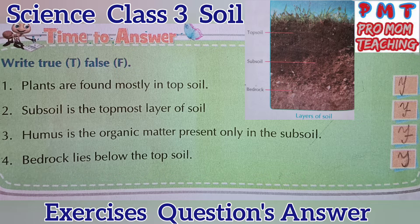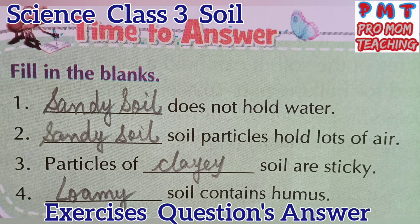Next: humus is the organic matter present only in the subsoil — false. Humus is organic matter, that part is correct, but humus is not present only in subsoil. Humus and other nutrients are mostly found in the uppermost layer of soil known as topsoil. Next: bedrock lies below the topsoil — true, because bedrock lies not only below the topsoil but also below the subsoil.